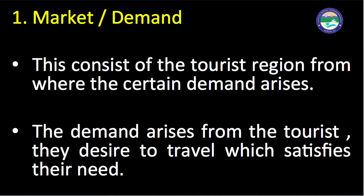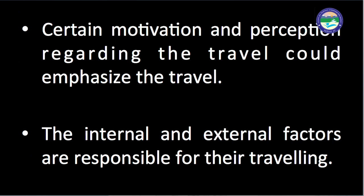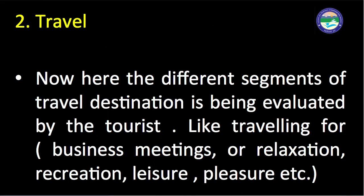The first component is market/demand. This consists of the tourist region from where a certain demand arises. The demand arises from the tourist's desire to travel, which satisfies their need. Certain motivation and perception regarding travel can emphasize the decision to travel, and internal and external factors are responsible for their traveling.